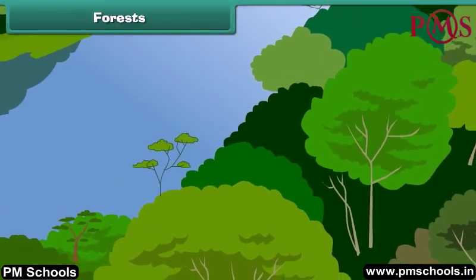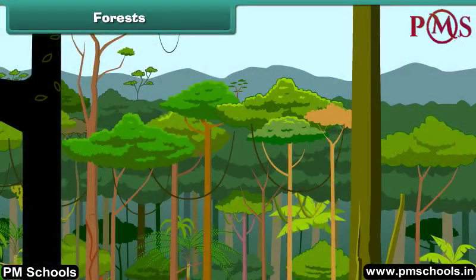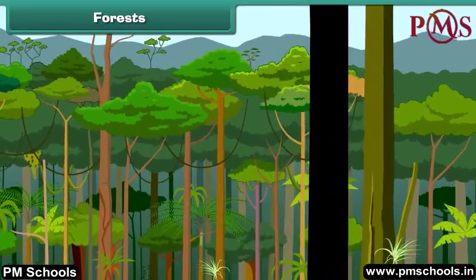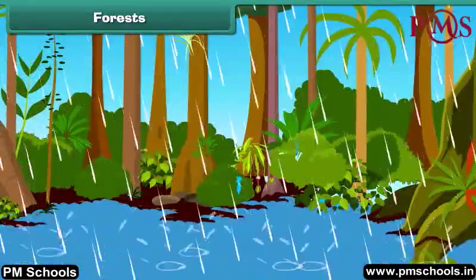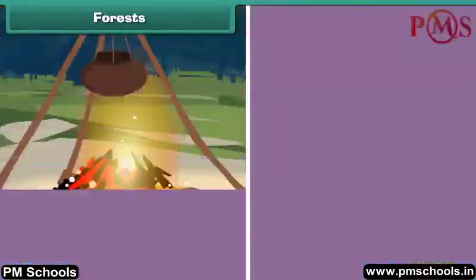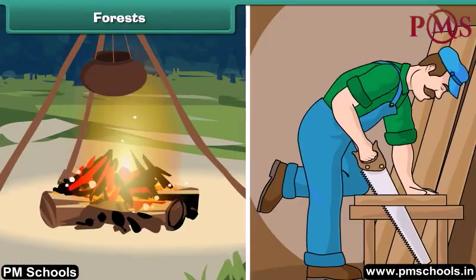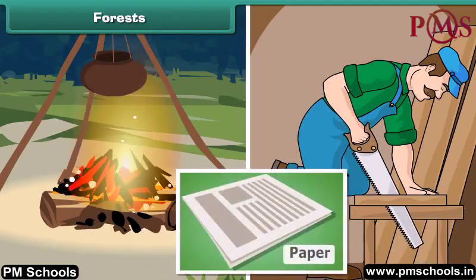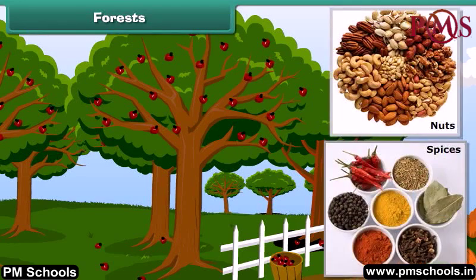A forest is a vast area covered with trees. It is an important natural resource. Forests give us oxygen and also help in rainfall. Trees give us wood for cooking, making furniture and building houses. Paper is also made from trees. We also get fruits, nuts and spices from trees.